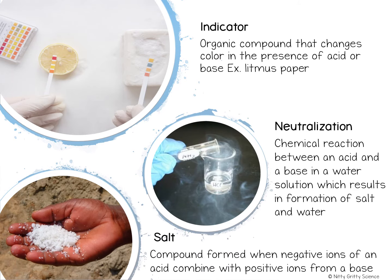We've already touched on indicators — these are organic compounds that change color in the presence of acids and bases. We've already talked about the example of litmus paper, where it turns red in acids and blue in bases, but you can also use natural substances as indicators, such as red cabbage juice, which will also turn different colors in the presence of different strengths of acids and bases.